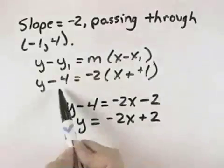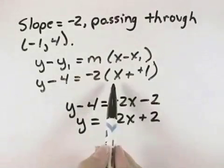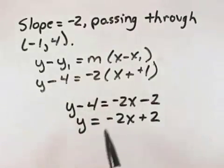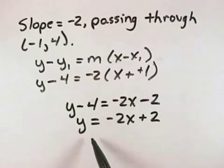So the two forms are y minus 4 equals negative 2 times the quantity x plus 1. Or in slope-intercept form, that's equivalent to the line y equals negative 2x plus 2.